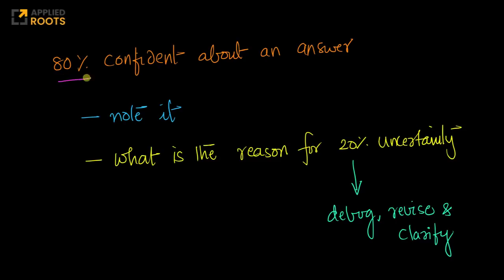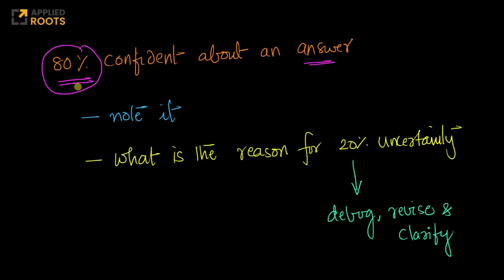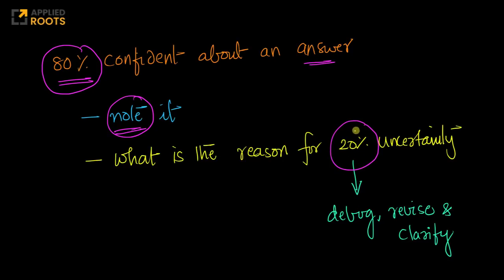Another very interesting question: imagine if you are 80% confident about an answer — what should you do? In the examination, 80% is a pretty good confidence level — go answer it as best as you can. But when you are learning and preparing, when you are solving practice tests, if you are 80% confident, make a note of the question. After you have solved it, ask yourself: what is the reason for the 20% uncertainty? Debug that — is it because you did not understand a concept well, because you do not know a formula correctly, or because there is some misunderstanding in your conceptual understanding?